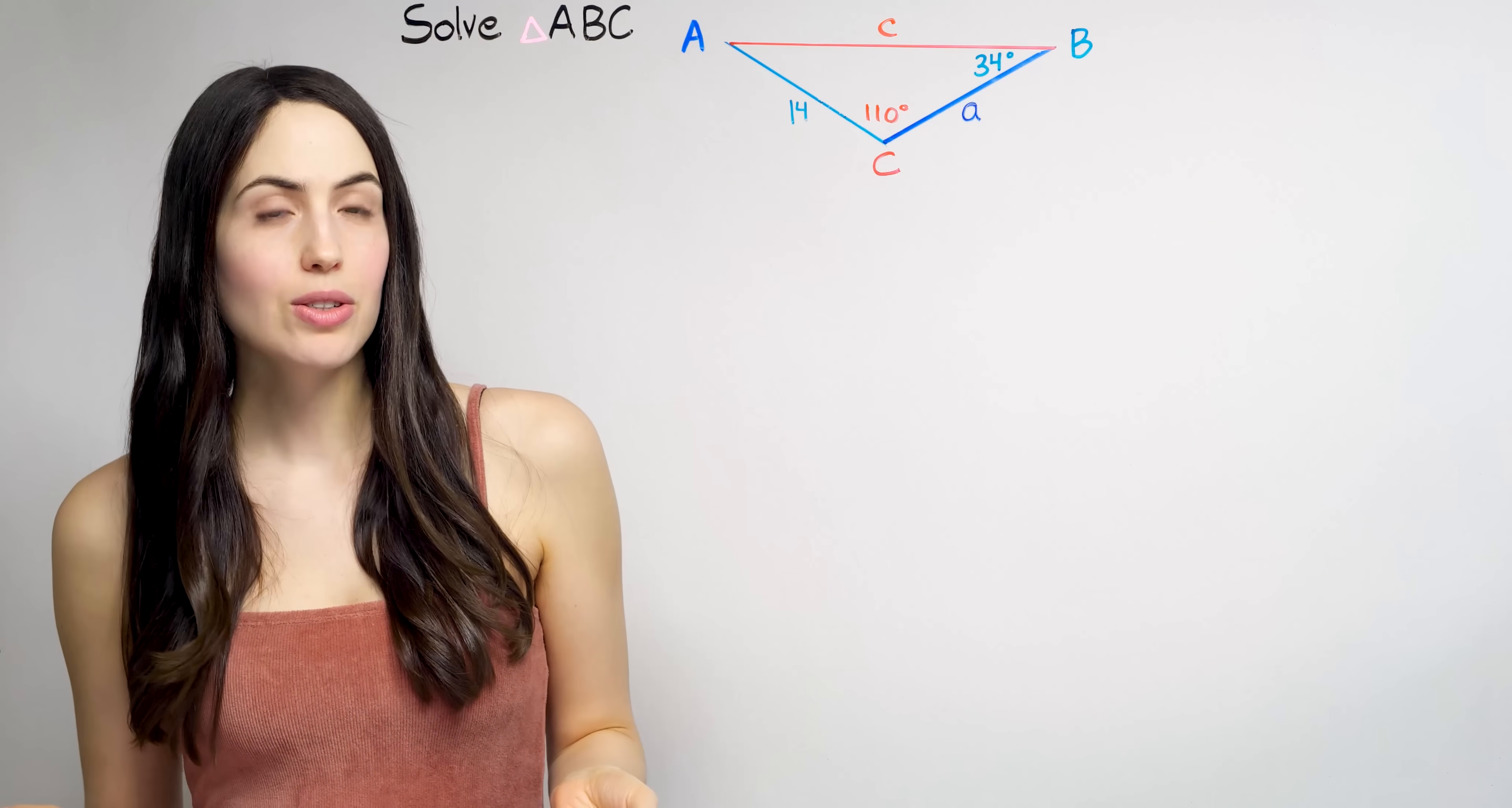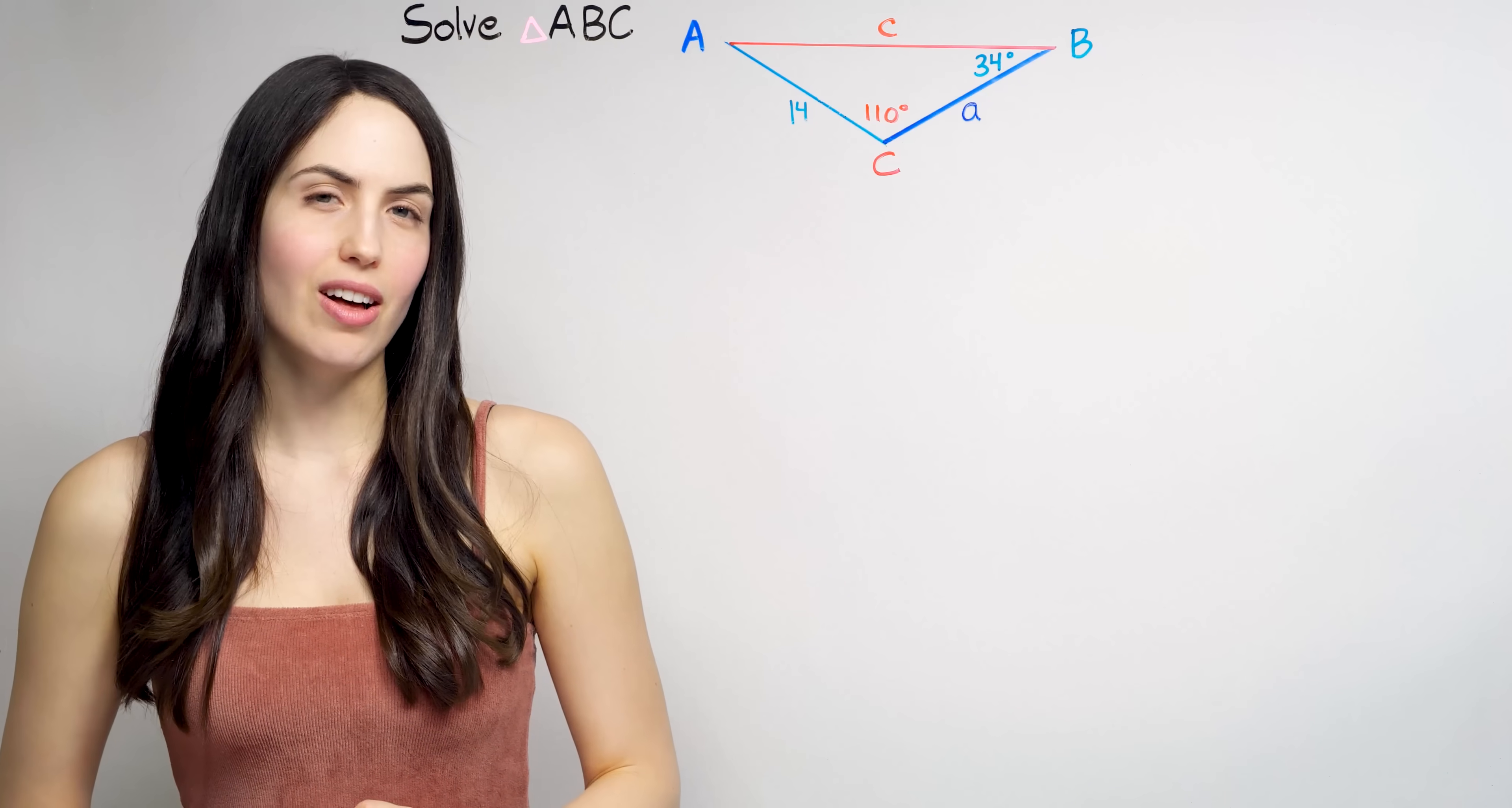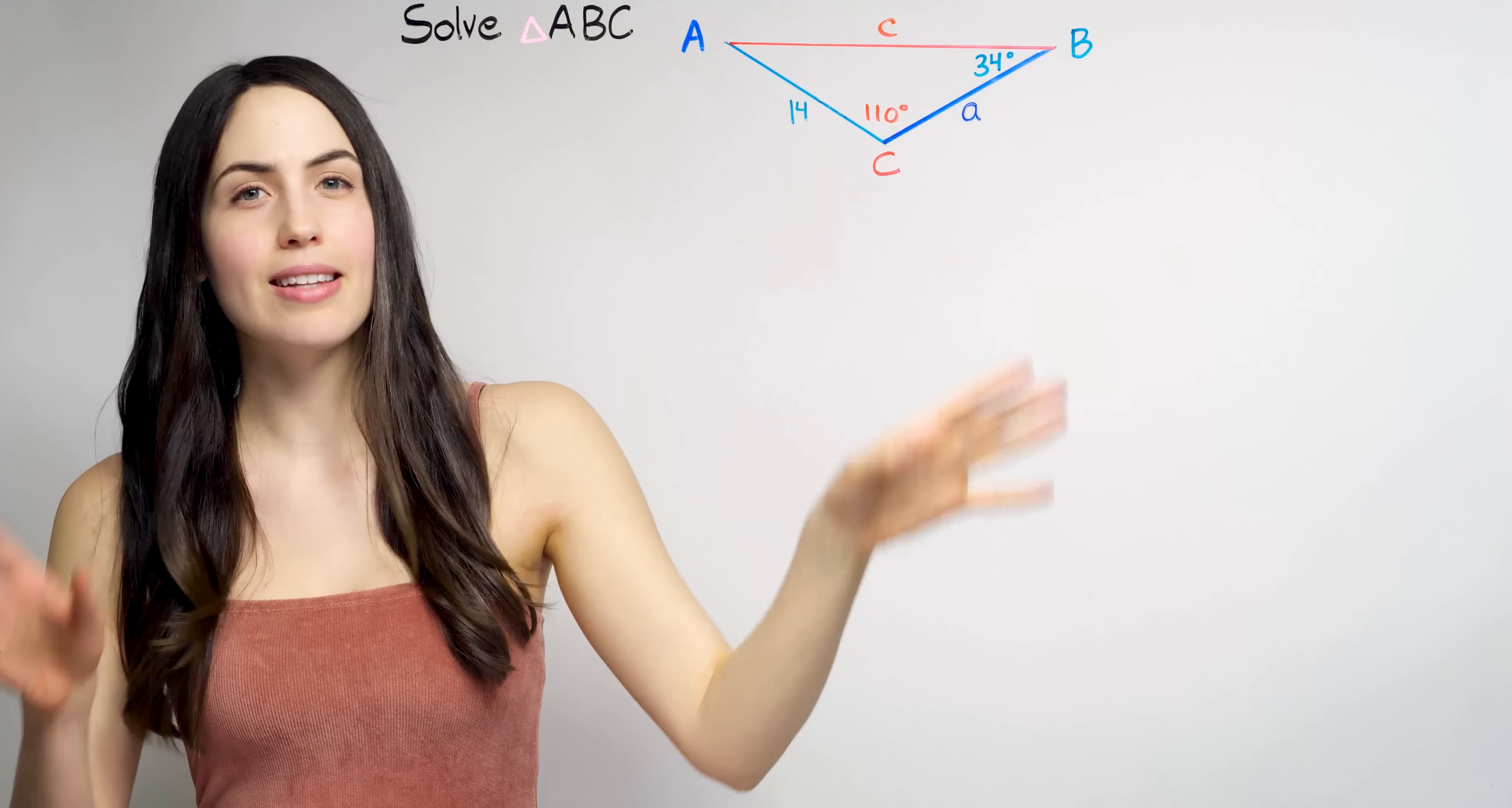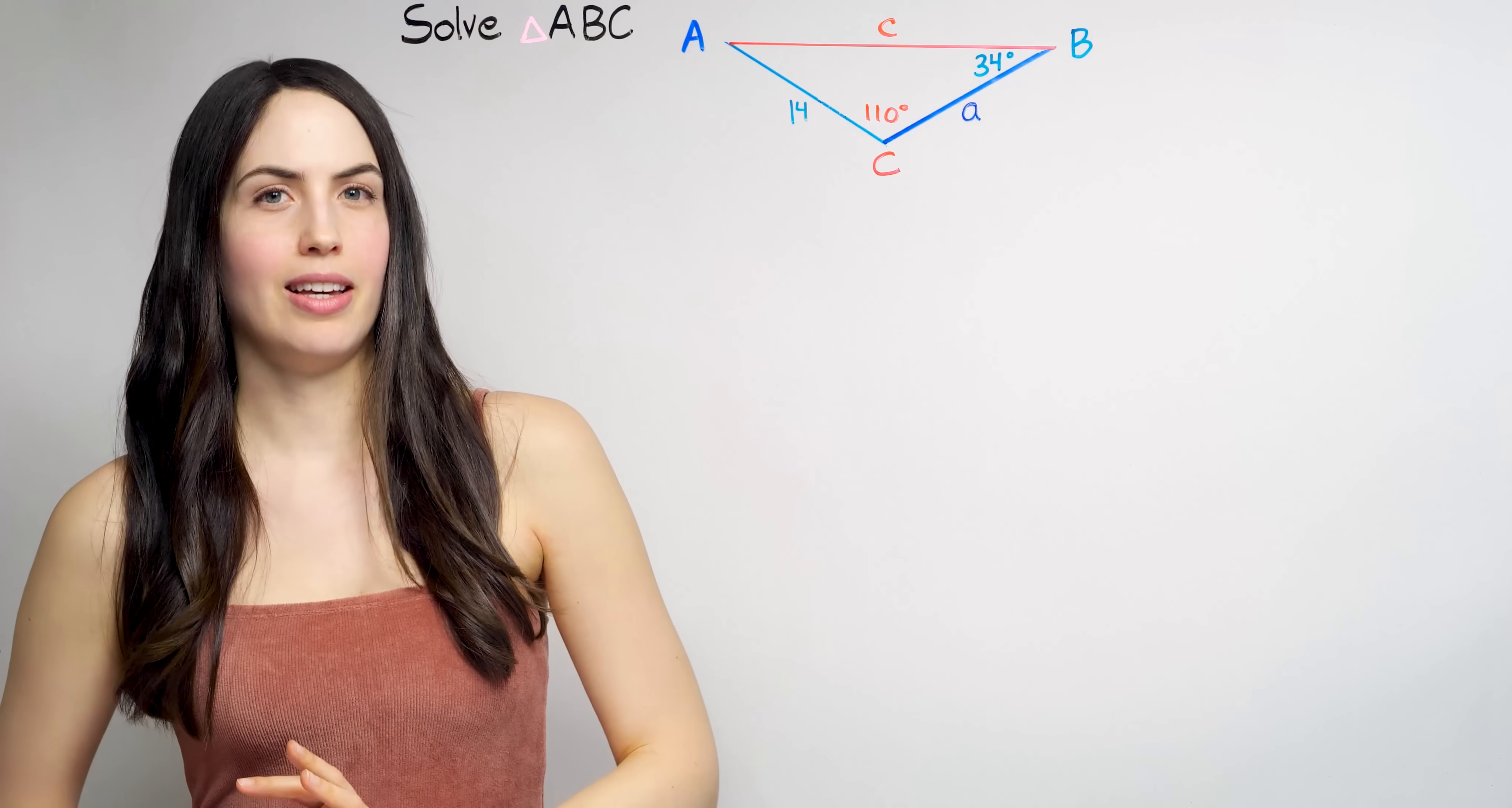So if it were a right angle triangle, we could use Pythagorean Theorem or a trig function to solve, but it's not a right triangle. Well, if you're given two angles and a side, any side, that's enough to solve using something called the law of sines.